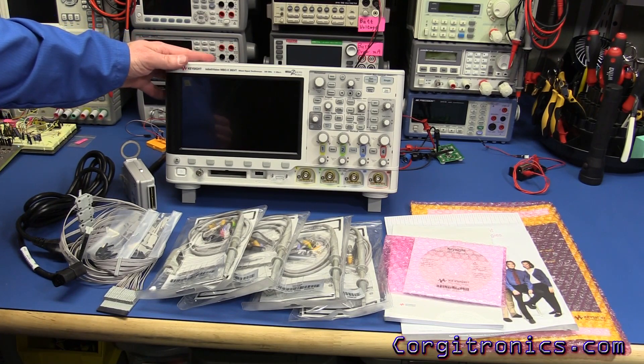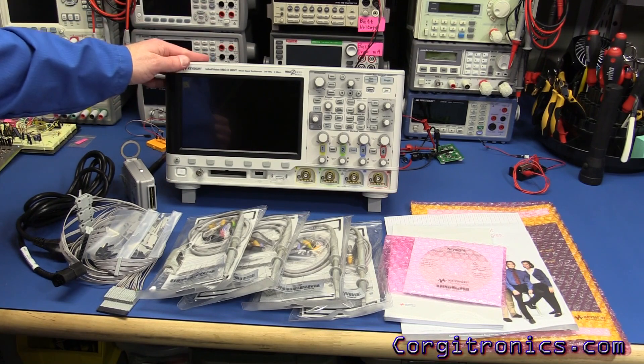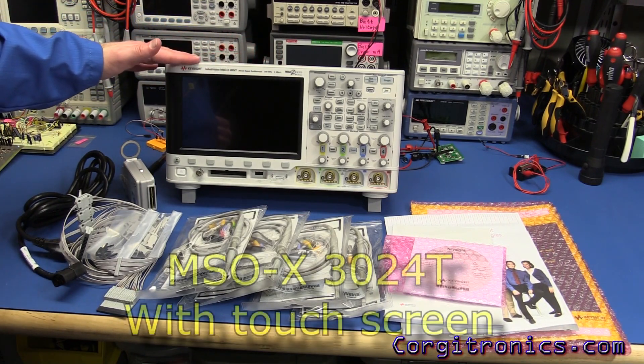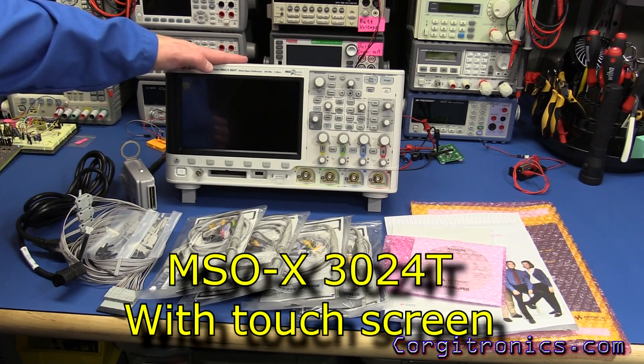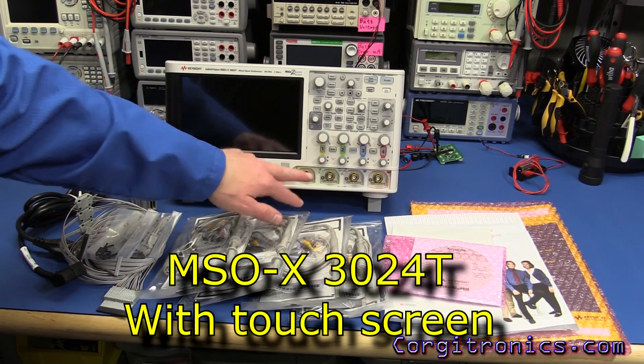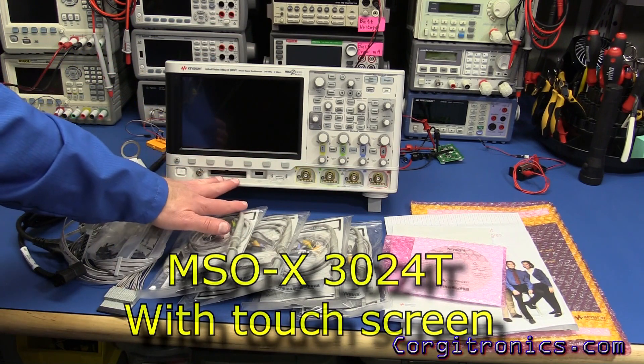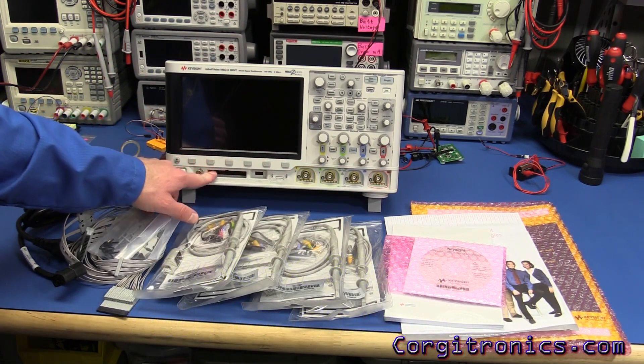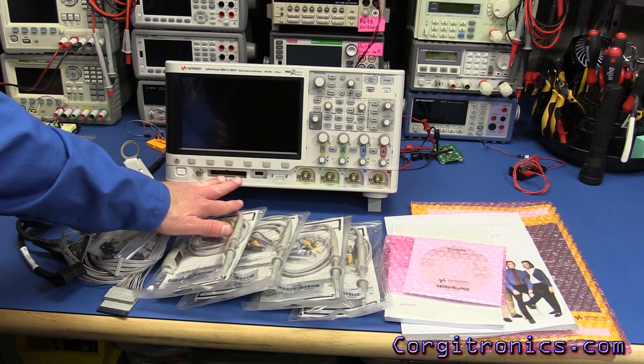This is a Keysight or Agilent, what are we going to call it these days? MSO X 3024. So I've got 200 megahertz, four analog channels along with the 16 channel digital interface down here.